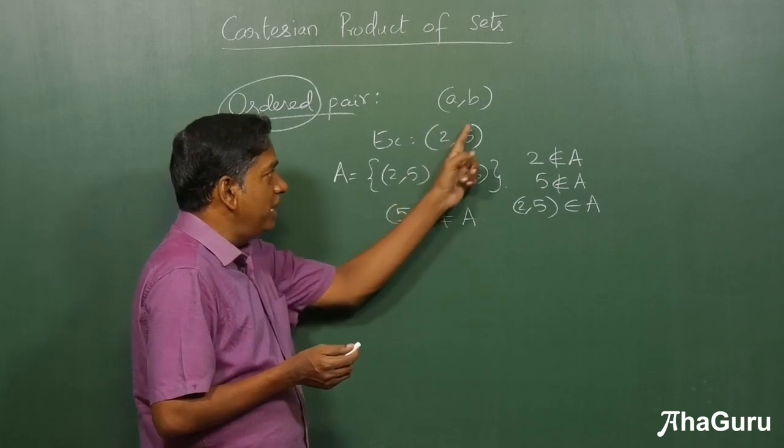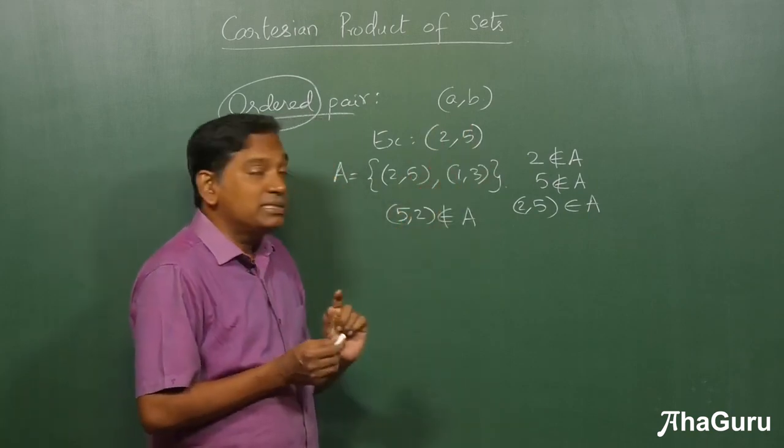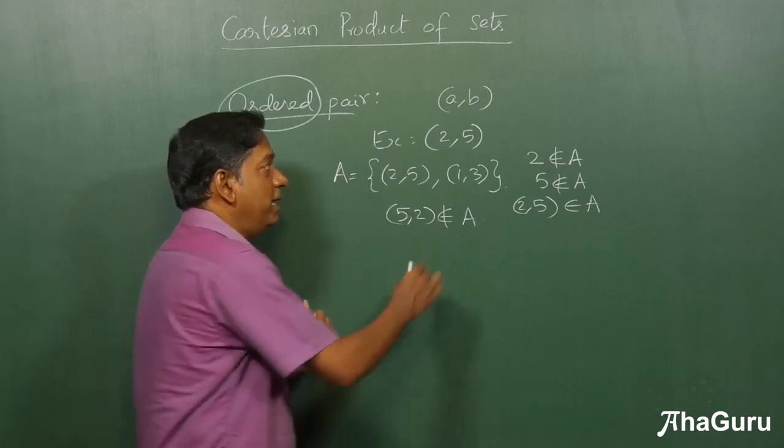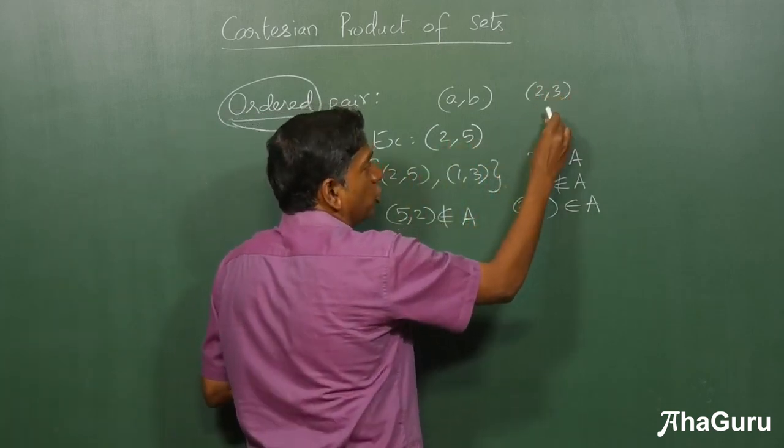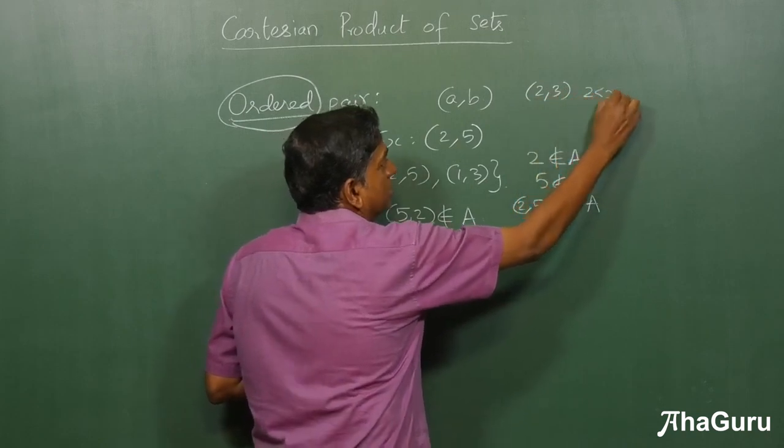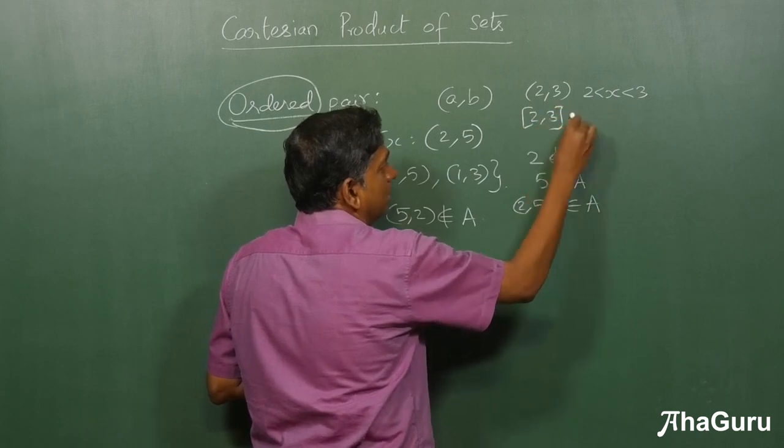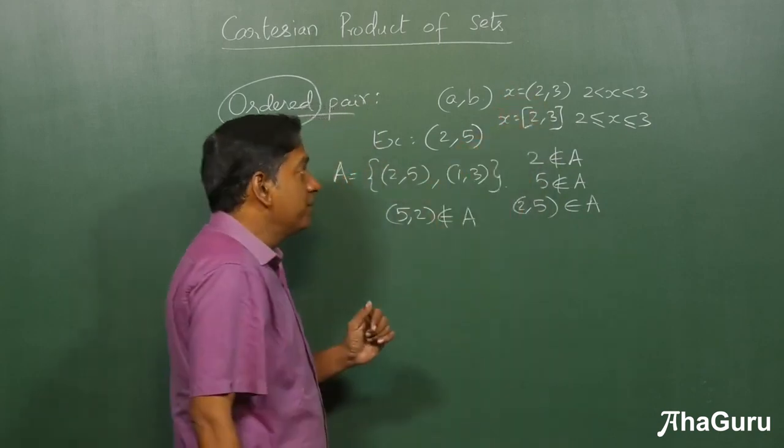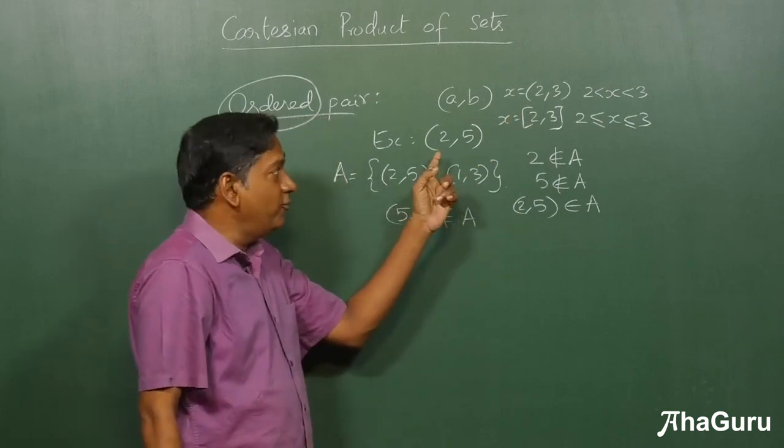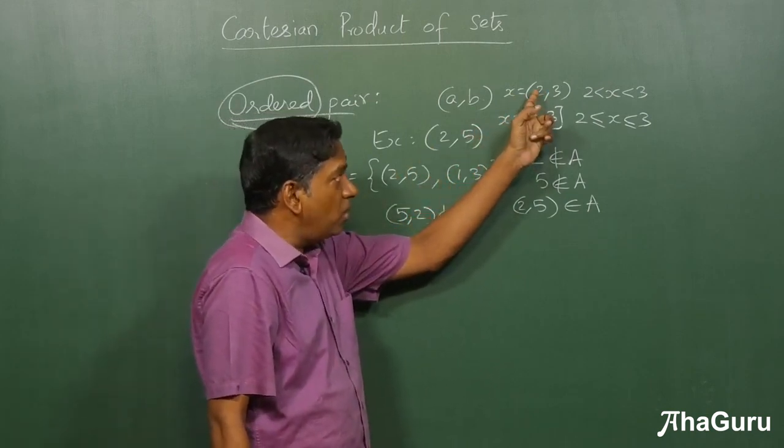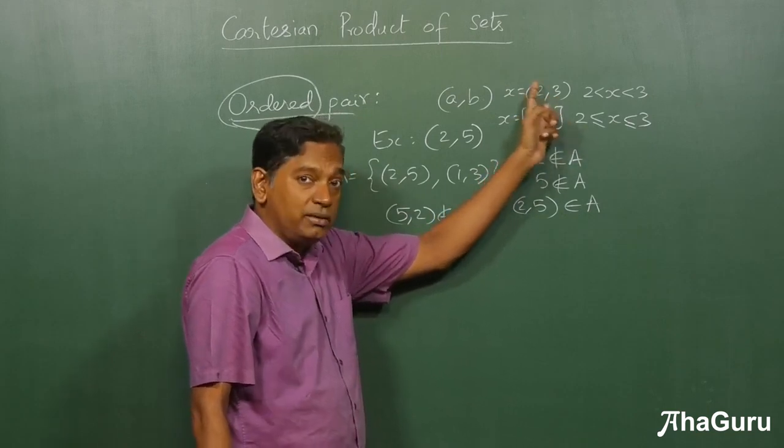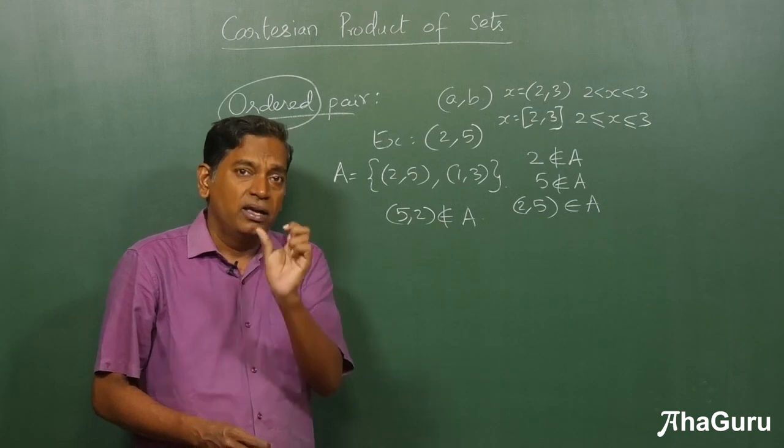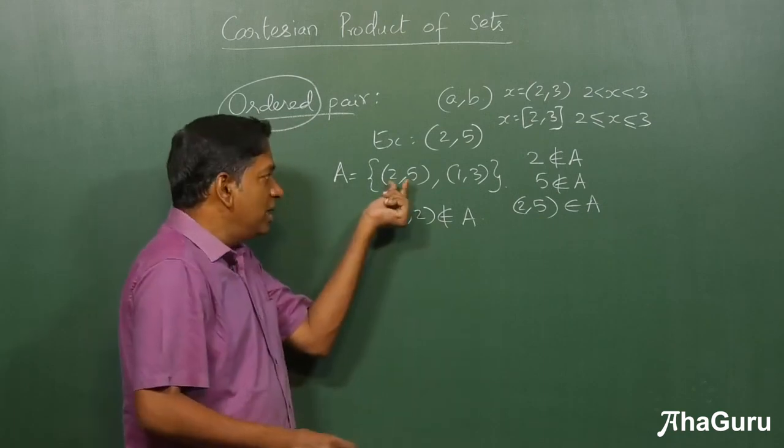Please understand, we have also learned in sets that intervals of real numbers can be denoted by round brackets or square brackets. For example, (2,3) is open interval from 2 to 3, so 2 less than x less than 3. And [2,3] square brackets means both 2 and 3 are included. This notation is a little confusing. If I say (2,3), it represents all real numbers from 2 till 3, both endpoints not included. But if I say an ordered pair (2,5), it is just one pair which contains the two elements 2 and 5.